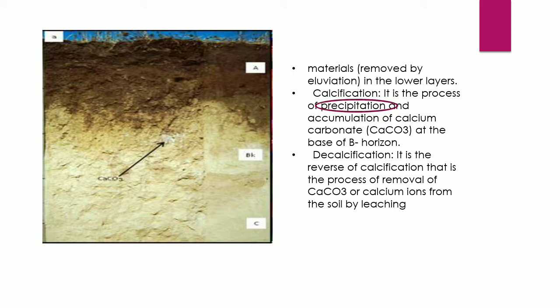Calcification is the process of precipitation and accumulation of calcium carbonate into the B horizon. Decalcification is the removal of calcium carbonate from the soil.